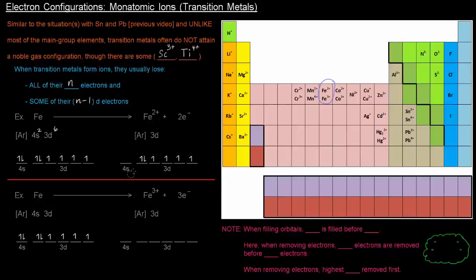It'll just basically lose those. 4s, they're no longer there anymore. So, what's left over for the configuration is just 3d6. That's the configuration of the iron 2 plus ion.